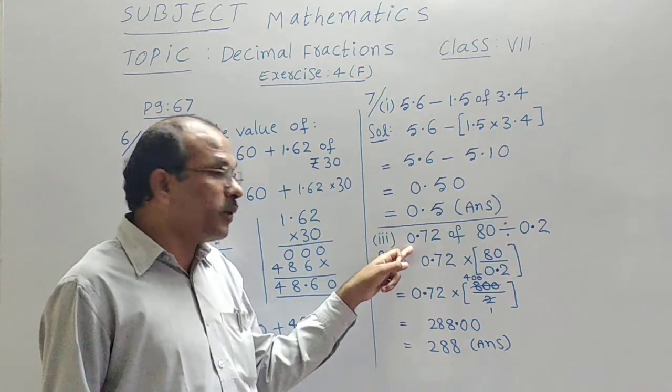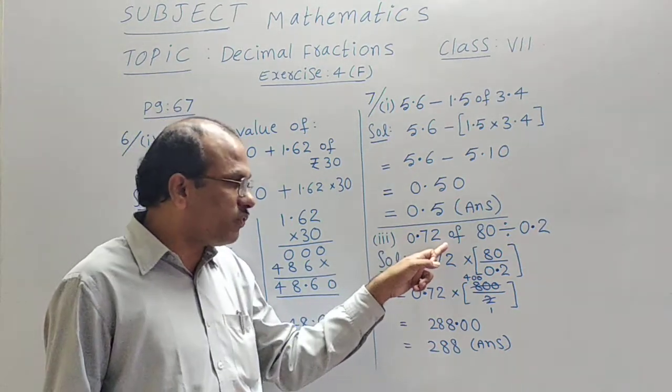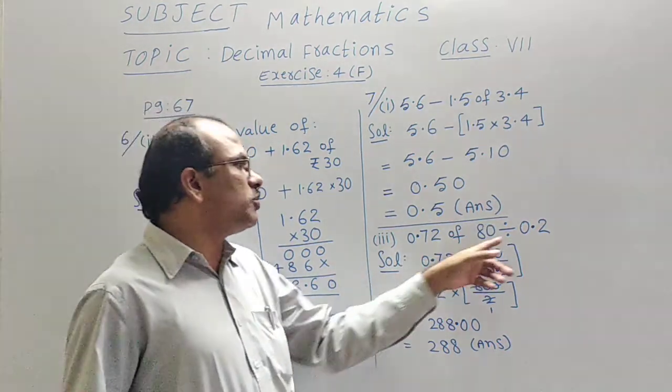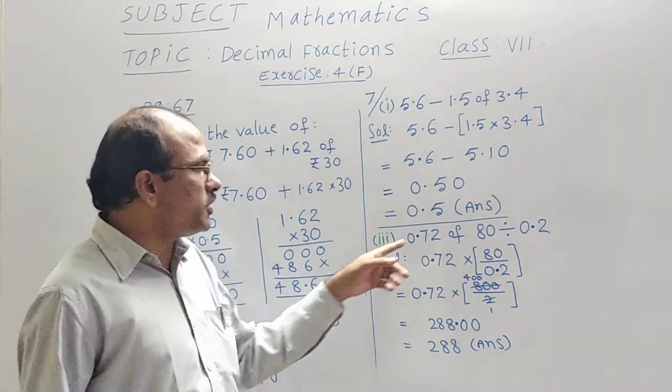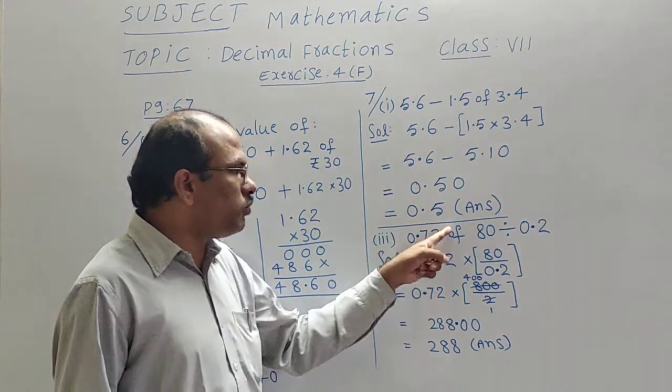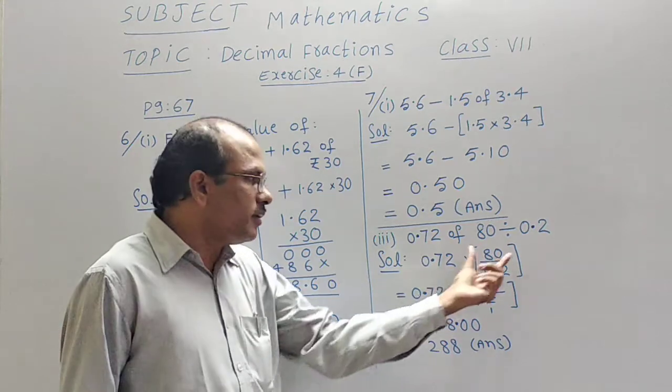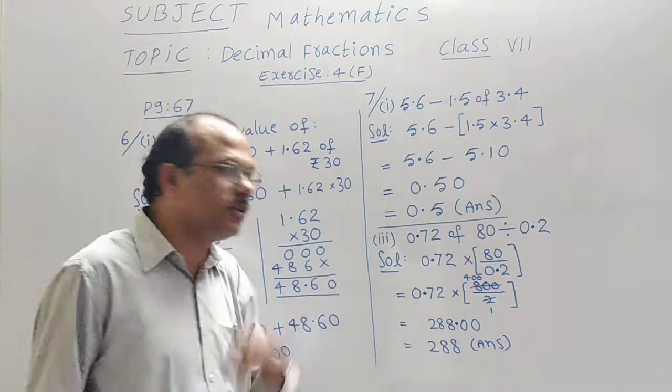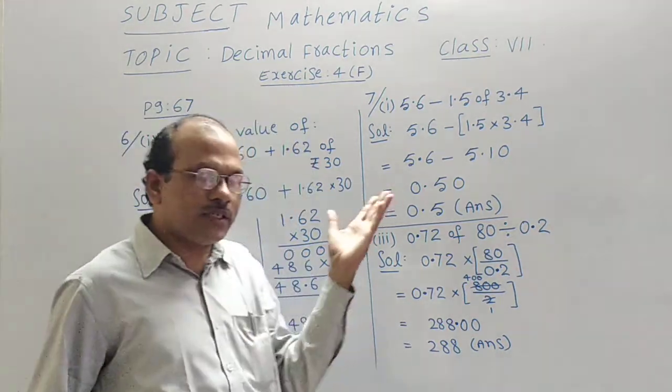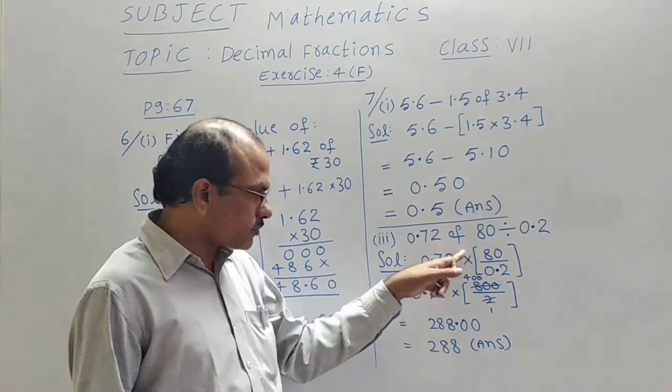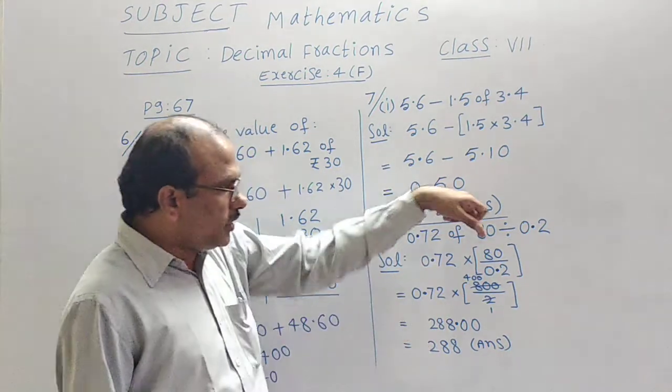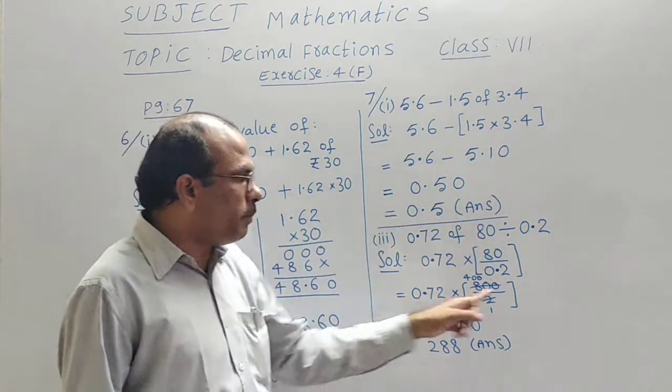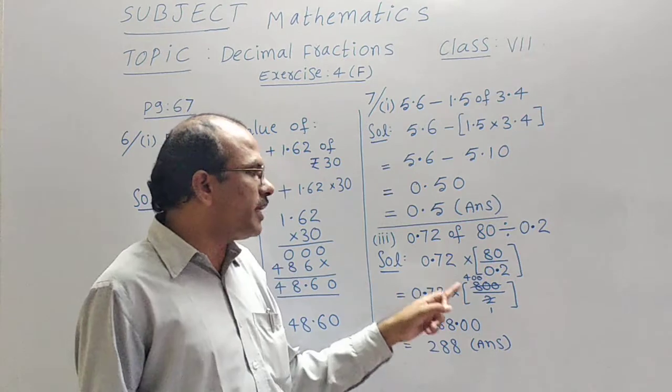Then third bit let us see. 0.72 of 80 divided by 0.2. Now the 0.72 I have dropped. Of means into symbol. These two are related with divided by symbol. So that in the bracket I have arranged.